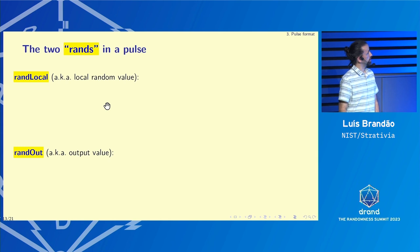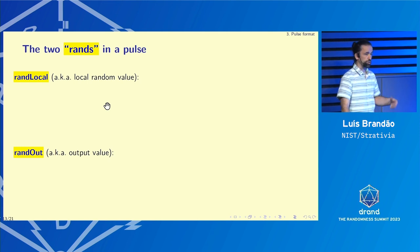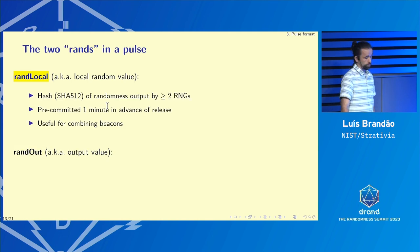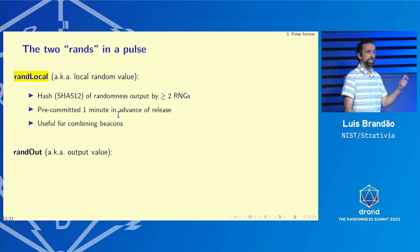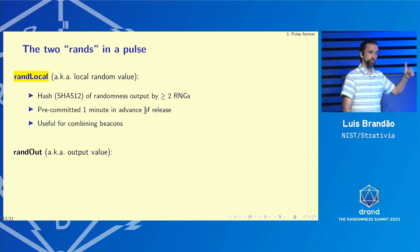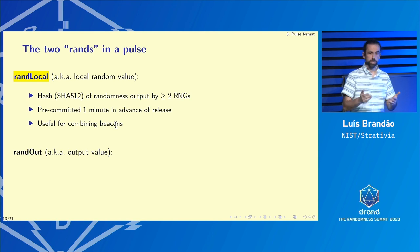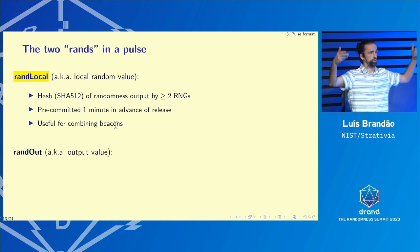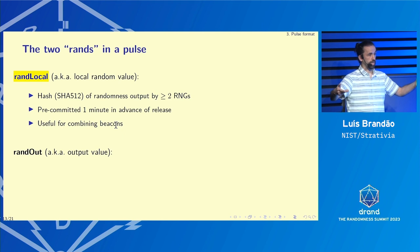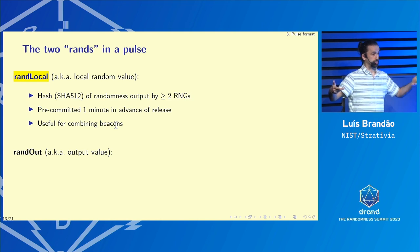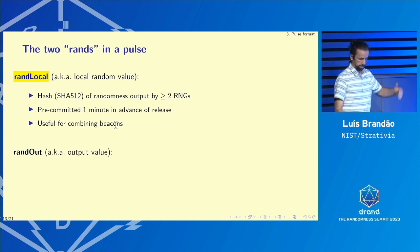What is a pulse exactly? A pulse has many items, but let me mention the essential parts of randomness. There are two fields we call 'grand something,' and there's what we call a local random value that is sampled — it's the hash of at least the outputs of two RNGs, and it's pre-committed one minute in advance of being released. So it's pre-committed in a pulse before the actual value is released in the next pulse. The reason for doing this — a feature of version two compared to version one — is that this allows combining randomness from different beacons, using a kind of typical coin flipping protocol. You pick several beacons, get their pre-commitments, and once you have all of them, you can safely use the randomness they reveal afterward because any malicious beacon could not have waited to know what the honest beacon's randomness was.